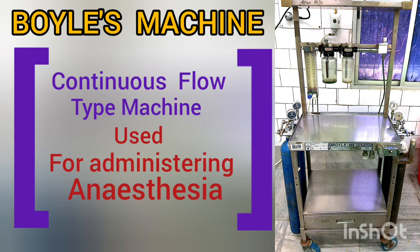Invented by Henry Edmund Gaskin Boyle, a British anesthetist in 1917, the Boyle's machine is the first anesthetic machine to be used in the world and is still used in different parts of developing countries.